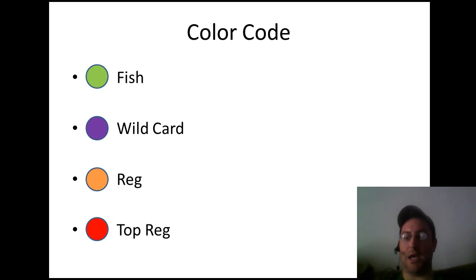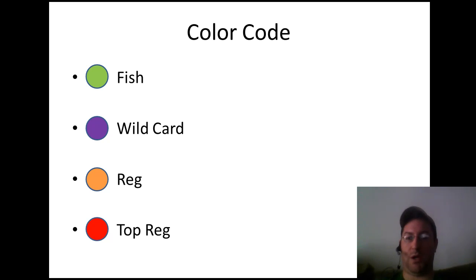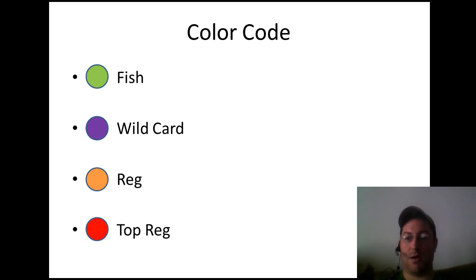In addition to taking notes, you also want to have a color coding system. Especially when multi-tabling, it's so easy to just see colors for different types of players so you get a quick idea of who's to your left or who you're up against. Having HUD stats is one thing and that's really helpful, but any further notes you have on specific players or their specific hands will further enhance your knowledge at the table.